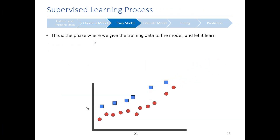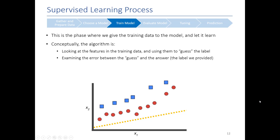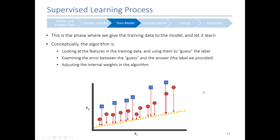The next phase of the machine learning process is to actually train our model. This is where we give the data to the model and let it learn. What happens differs for every algorithm, but conceptually the algorithm looks at all the features in our data and tries to guess the label, producing some line or function that tries to differentiate between categories. It then examines its guess, compares it to the actual answer, adjusts itself, guesses again, calculates the error, and keeps doing this over and over until the error is minimized.